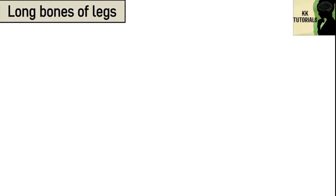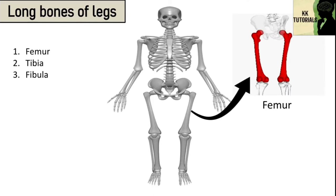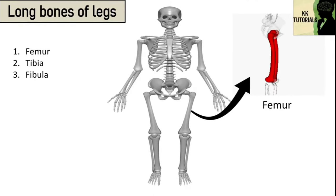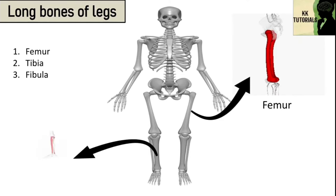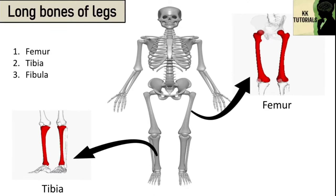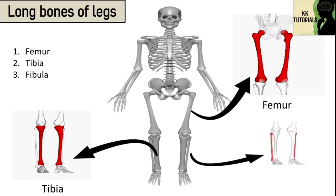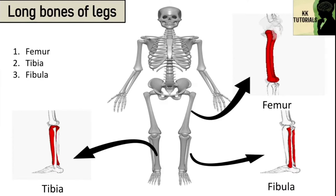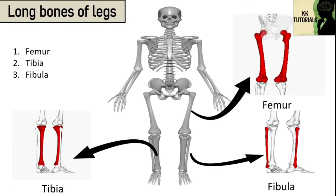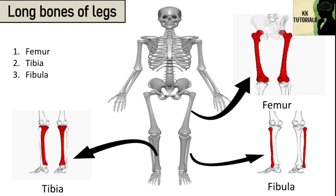Long bones of legs include three types: femur, tibia and fibula. The femur is the only bone in the thigh and the longest bone in the body; it acts as the site of origin and attachment of many muscles and ligaments. The tibia, also known as the shin bone, is the larger, stronger and anterior bone of the two bones of the lower leg below the knee joint. The fibula, also known as the calf bone, is thinner compared to the tibia and is present on the lateral side of the tibia below the kneecap. These bones are hard, dense bones that provide strength, structure and mobility.